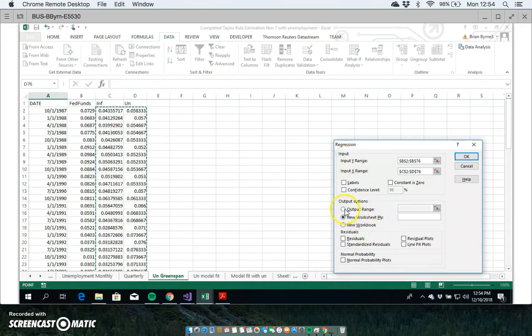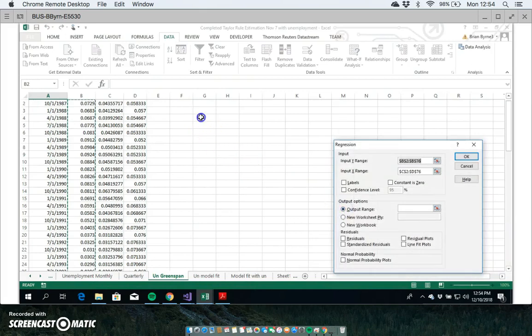Then the output range I'm going to put here. I've got to do that again, so I'll pause. I'll stop the video and then in video two I'll complete the estimation.